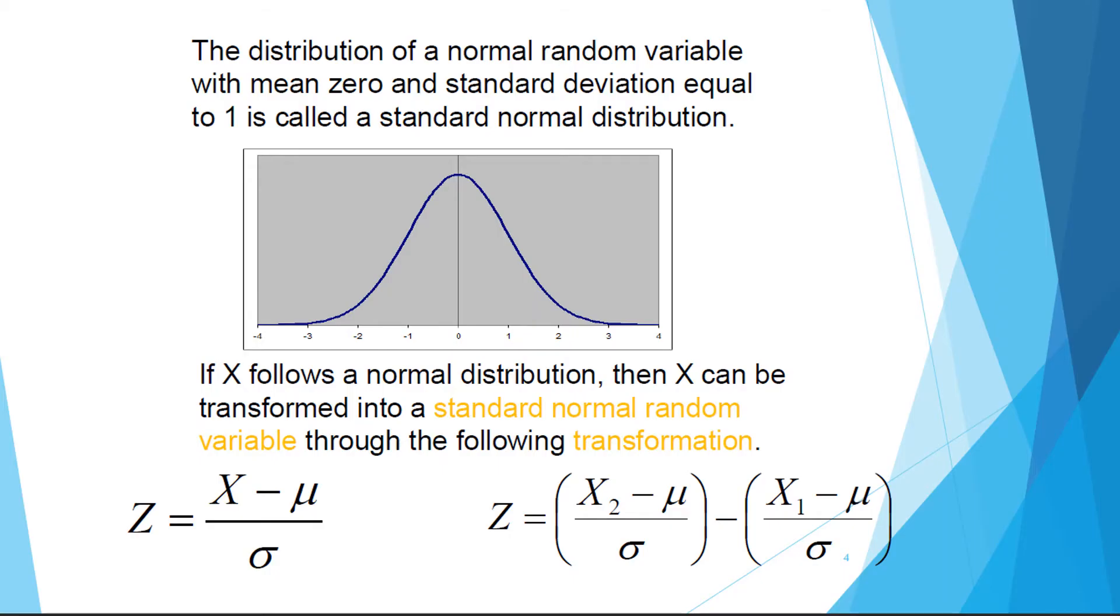This slide only tells us that a normal distribution is said to be standard normal distribution if its mean is equal to 0 and its standard deviation is equal to 1.